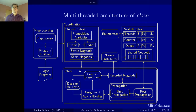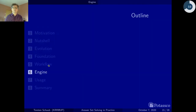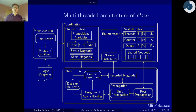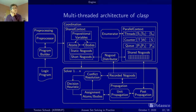Now let's follow the workflow a little bit. We start with the logic program at the bottom. This logic program is fed into the solver — keep in mind that it comes out of the grounder, it is propositional, there are no variables for objects anymore. It is fed into the solver, then the program builder starts and creates a data structure.